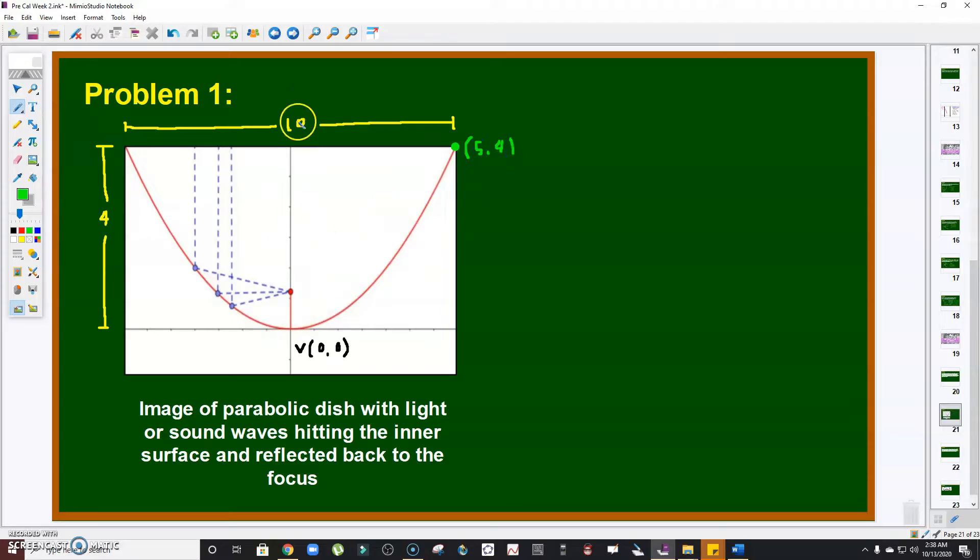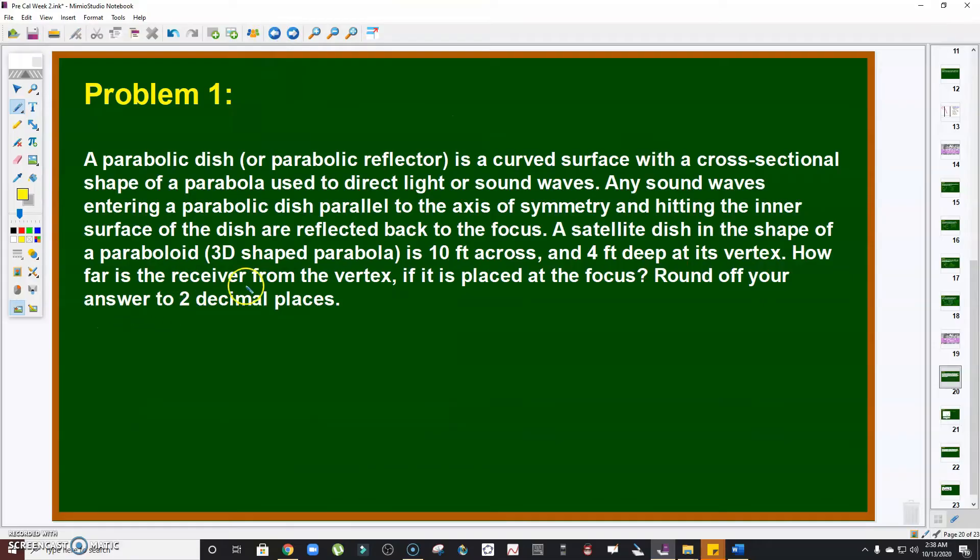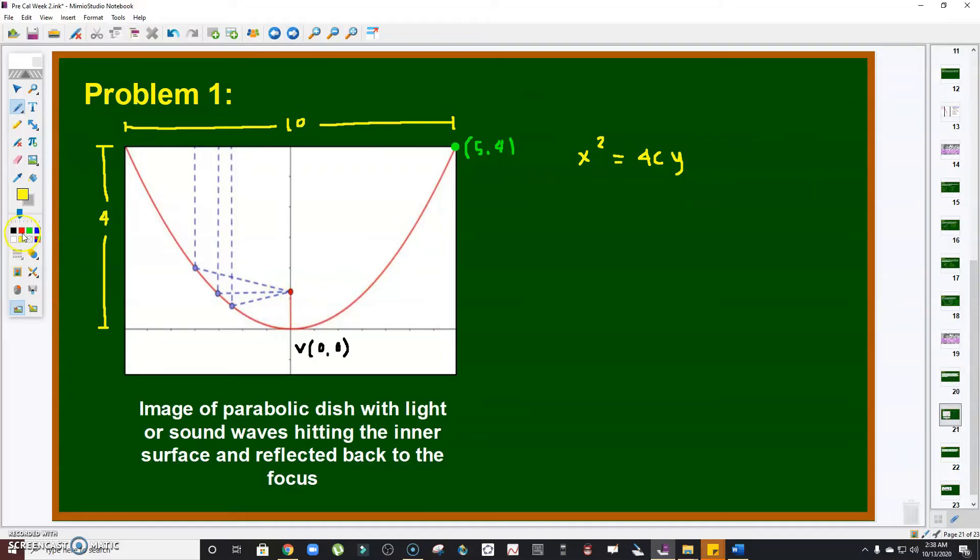This is the axis of symmetry. The parabola opens upward with vertex at the origin. Therefore, we know the equation is x² = 4cy, since h and k are zero with the vertex located at the origin. Now the question is: how far is the receiver from the vertex if it's placed at the focus? We're just looking for c.